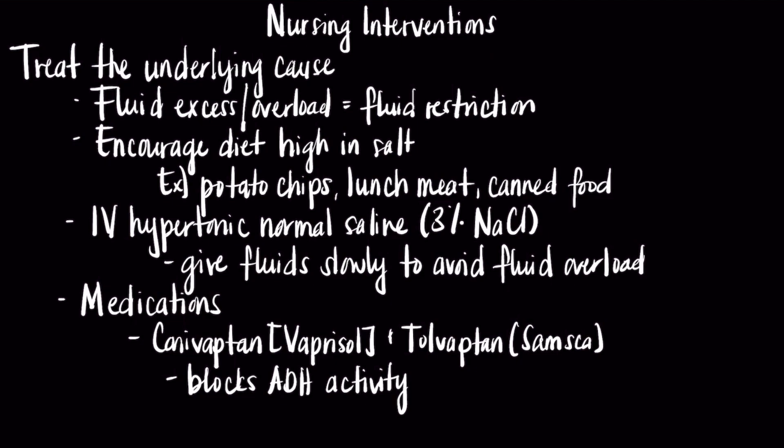When it comes to nursing interventions, you would first determine and then treat the underlying cause. If hyponatremia is rooted from an excess of fluid in the body, place patients on a fluid restriction. Also encourage patients to consume a diet rich in sodium — sodium tablets may also be given. Some examples of sodium-rich foods are potato chips, lunch meat, and canned food. IV hypertonic normal saline may also be administered to correct both fluid loss and low sodium, but remember to give these fluids slowly to avoid fluid overload.